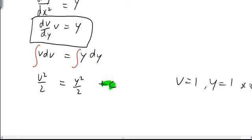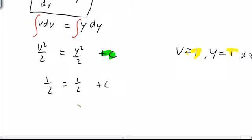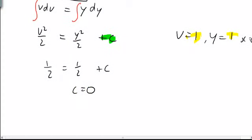We can use these two here, v and y. Sub them in there, and we get a value for c. And sub them in there, we get 1/2 is equal to 1/2 plus c. So, c is equal to 0, and we have our new equation, which is v²/2 is equal to y²/2.